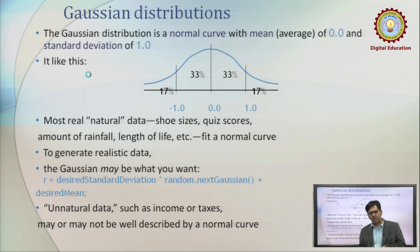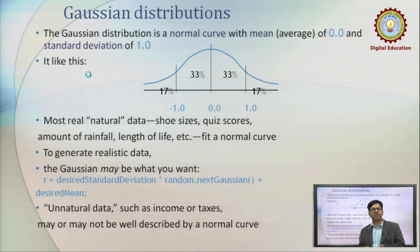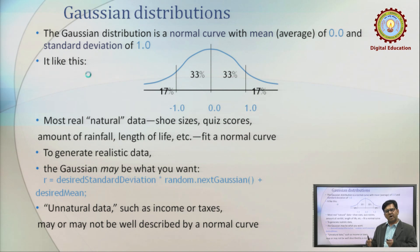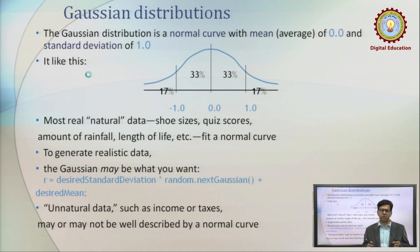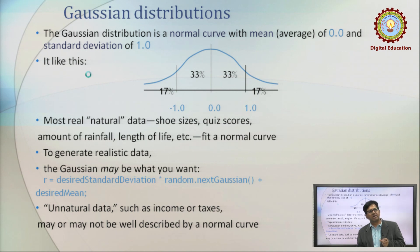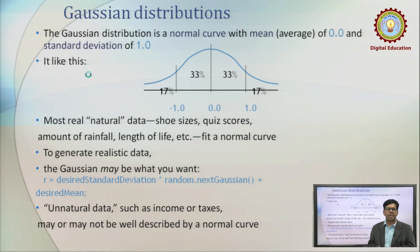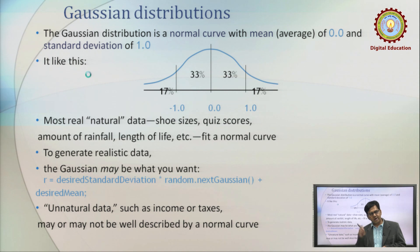For example, if we want to know the probability of those persons who have billions and trillions in wealth, this is not a natural phenomenon. There is a small probability of having persons with such enormous income, so for those types of phenomena, the Gaussian distribution does not work.